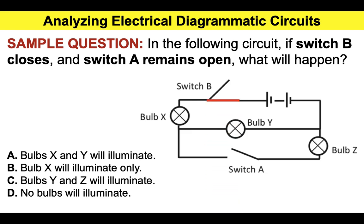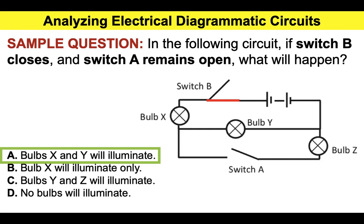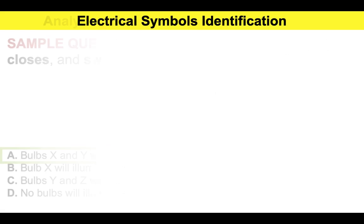If we close switch B, we have that circuit now. The only one that is connected is that element there. Therefore, bulbs X and Y only will illuminate, because switch A remains open, and therefore bulb Z cannot function correctly. The important thing with these questions is to always think about the location of the battery — the power source — which is right there on the top. Always focus on that part, because that is an integral aspect of answering these kind of questions.